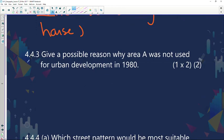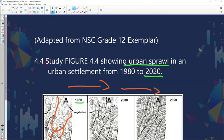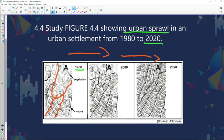Now if we quickly look at 4.4.3, give a possible reason why area A was not used for urban development in 1980. If you quickly look at it, these lines represent your contour lines and you can see they are quite close to one another.